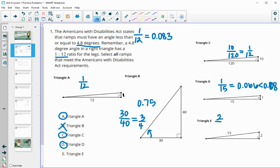Also, triangle E is 2 over 15. And so then this decimal is 0.134. And that is not less than the 0.083 requirement. So triangle E is too steep.